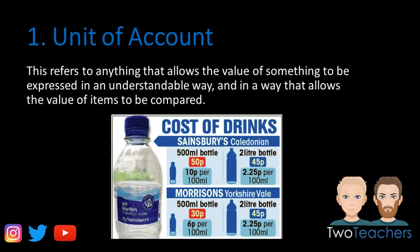The first function is unit of account. This allows you to look at the value of something. Money lets you understand value more easily. Before money, it was hard to compare two items. For example, a 500ml bottle of water at 50p versus a 2-litre bottle at 45p — the 50p one is 10p per 100ml, while the 2-litre bottle is 2.25p per 100ml, making it four times cheaper. That's thanks to the unit of account.